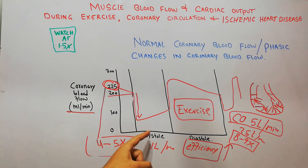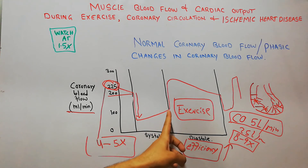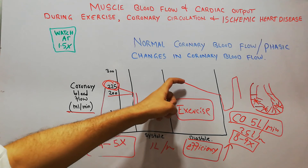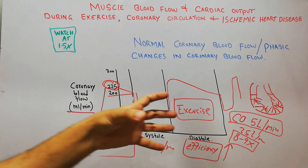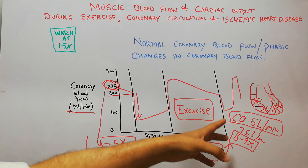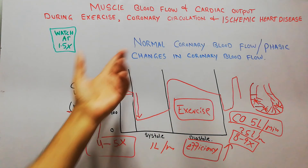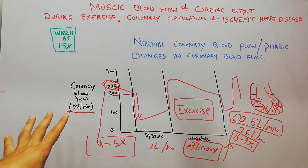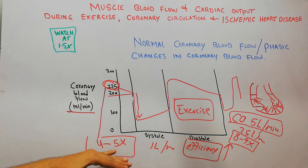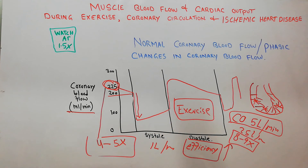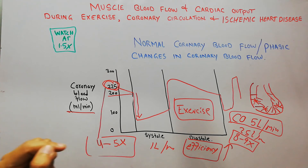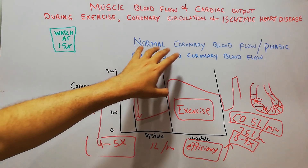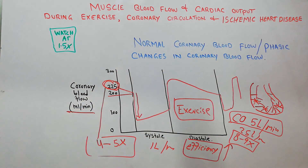To summarize: the normal coronary blood flow is 225 ml per minute. There is a decrease in systole because the small branches of the main coronary vessels get compressed by the contracting heart muscle. When systole ends and diastole begins, blood flow increases again, then decreases drastically when systole starts again. In exercise, this normal blood flow may increase four to five times, and the efficiency of the heart muscles also increases. That concludes this lecture on normal coronary blood flow and phasic changes.